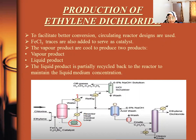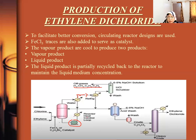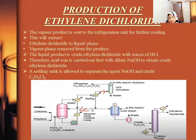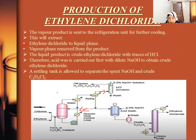The product stream contains the main product along with other materials that need to be recycled. It is sent to a refrigeration unit for partial condensation. The off gases produced include hydrogen, methane, and ethane. Some streams are sent back for recycle and some for washing. The vapor product is sent to the refrigeration unit for further cooling.